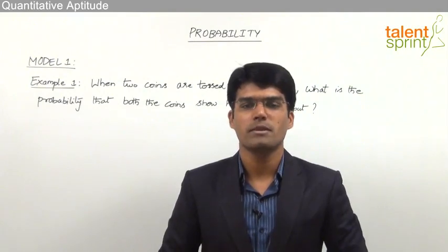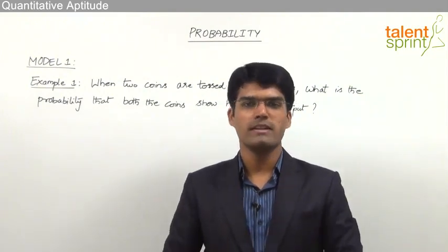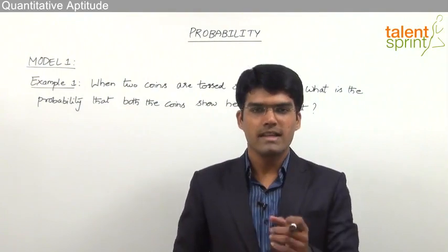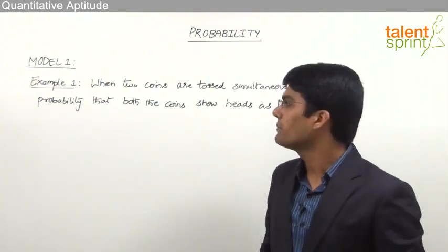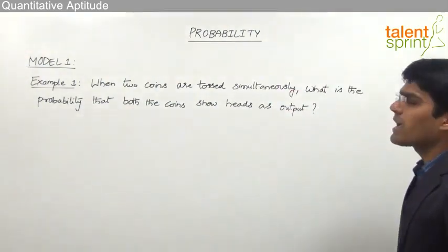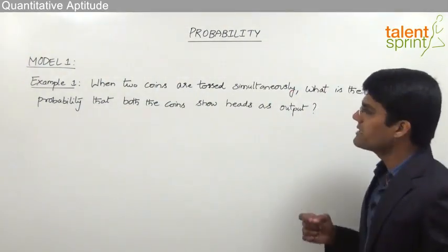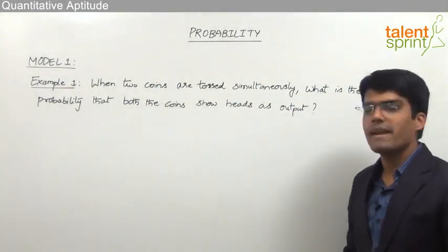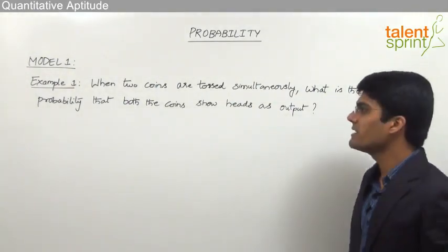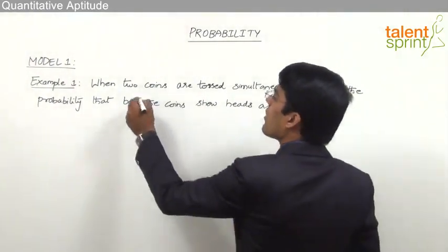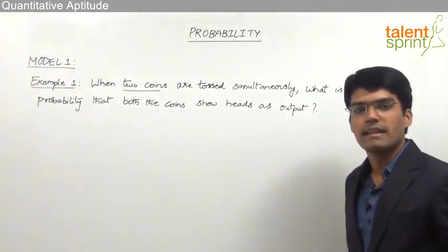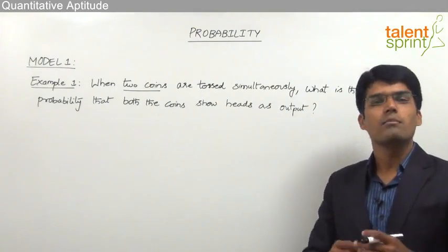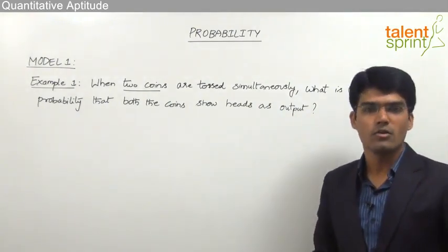Let us now take the first model from the topic of probability, where we shall discuss questions related to tossing of coins. Let us have a look at the first example. When two coins are tossed simultaneously, what is the probability that both the coins show heads as the output?